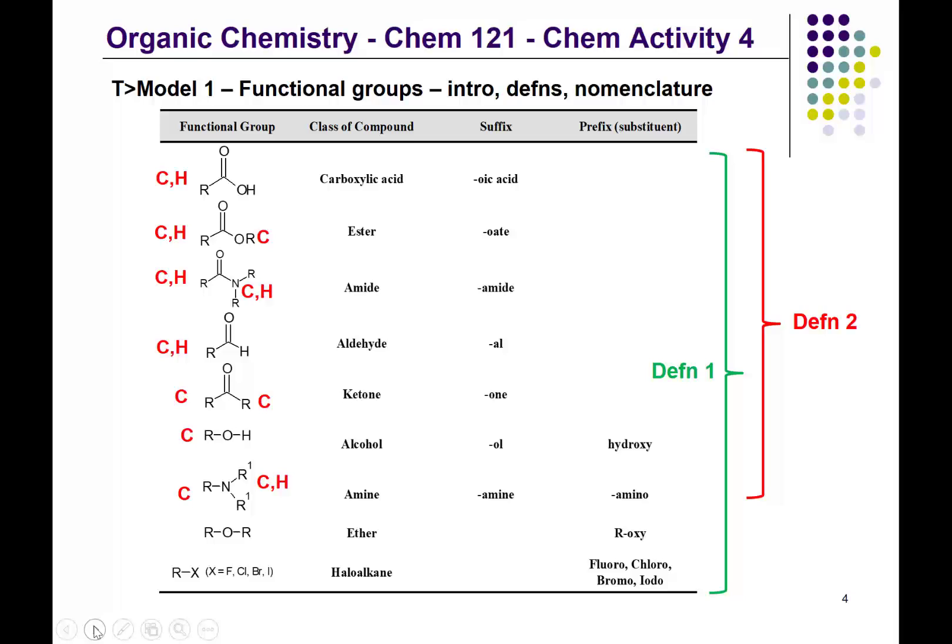Note there can be some confusion between amines and amides. One way to remember that an amide has the C double bond O and N is to notice that in the name 'amide' there's a D — and that reminds you: amide, double bond, yes, C double bond O. It's a bit lame, but it helps remember the distinction. Amine does not have the C double bond O next to the nitrogen.